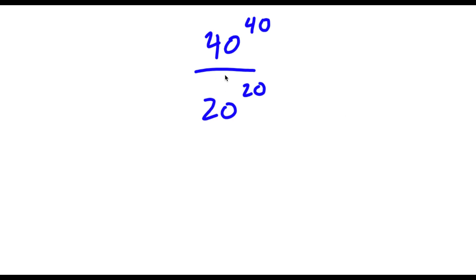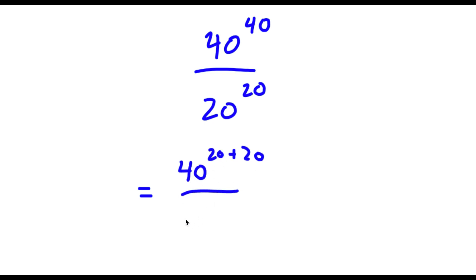Alright, so I have 40 to the power of 40 over 20 to the power of 20. I can rewrite this as 40 to the power of 20 plus 20, over 20 to the power of 20. All I did was rewrite 40 as 20 plus 20, because 40 equals 20 plus 20.